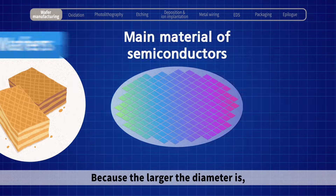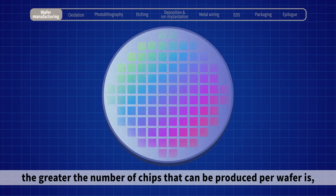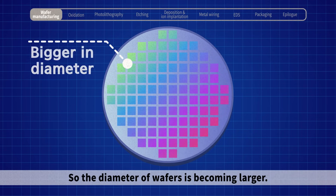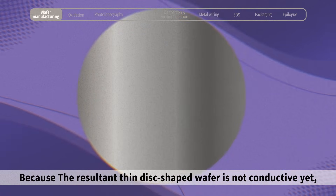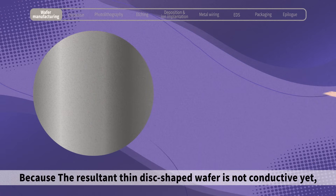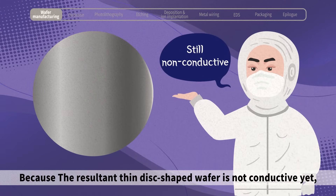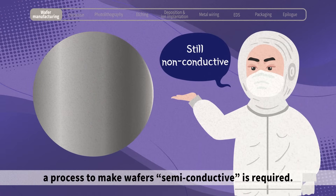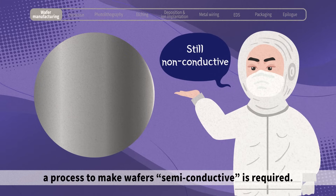Because the larger the diameter is, the greater the number of chips that can be produced per wafer, so the diameter of wafers is becoming larger. Because the resultant thin, disc-shaped wafer is not conductive yet, a process to make wafers semi-conductive is required.